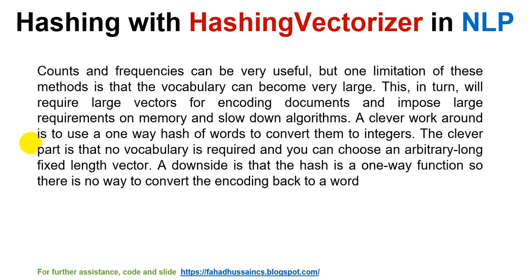For this reason, a clever workaround is to use a one-way hash of words to convert them to integers. The hashing technique converts the frequency or count of all words into an integer hash. The clever part is that no vocabulary is required and you can choose an arbitrary fixed-length vector. The downside is that the hash is a one-way function, so there is no way to convert the encoding back to a word. But the advantage is that no vocabulary is required and the vector becomes a fixed, arbitrary length.